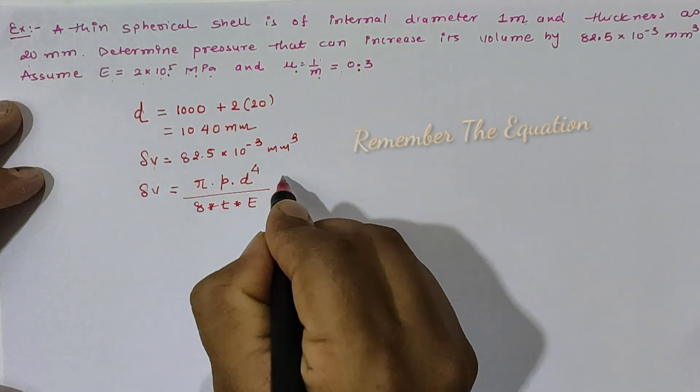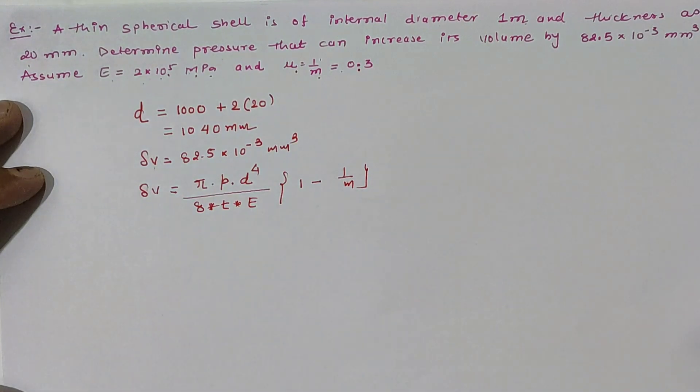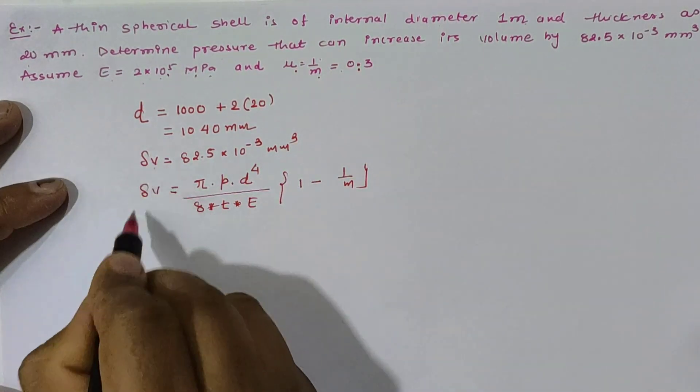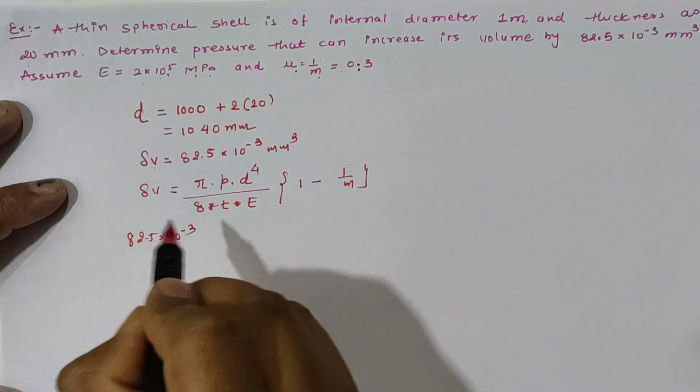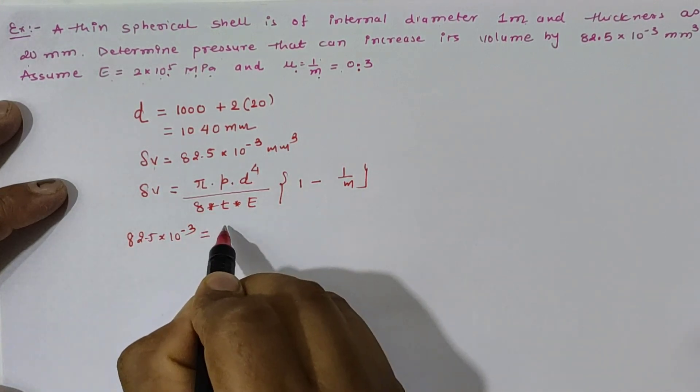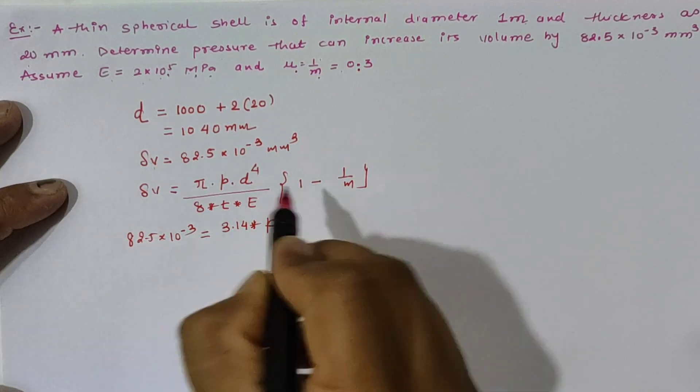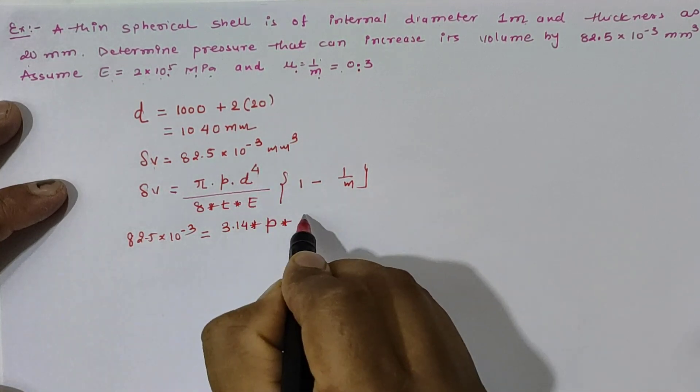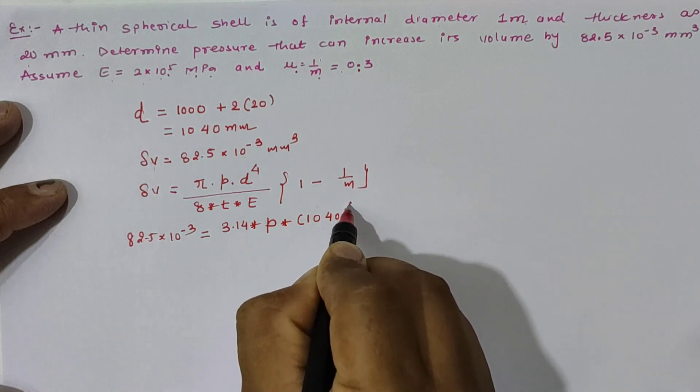So let us put all the values. Δv as 82.5 × 10^-3, which is equal to π as 3.14, pressure we have to calculate it, diameter is 1040 raised to 4...